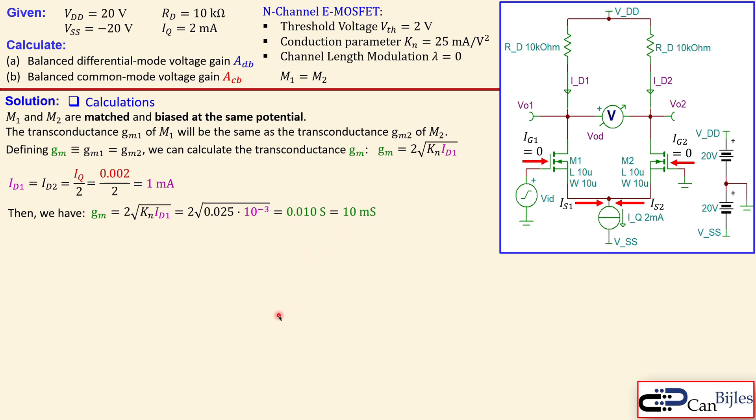Now we have the necessary parameters for our first calculation of question A, which is the balanced differential mode voltage gain. In a similar form as we did for the BJT differential pairs, that's just the differential mode output voltage divided by the differential mode input voltage, VOD over VID. There is a minus sign because there is an inversion. So it will be minus gm times RD, which is minus 100 exactly.